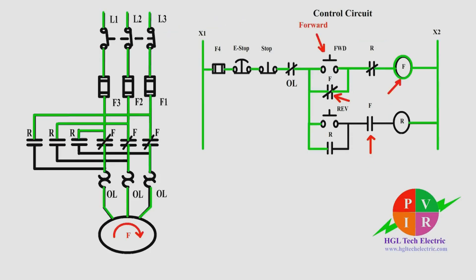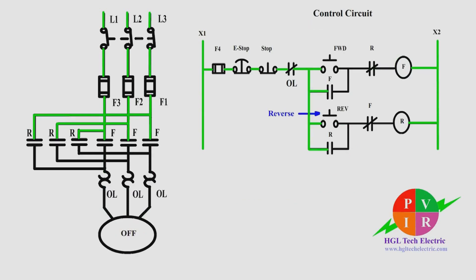Therefore, now if the motor is running forward and an operator accidentally presses the reverse button. Pressing the stop button resets the system, and the operator can now run the motor in the opposite direction by pressing the reverse button.